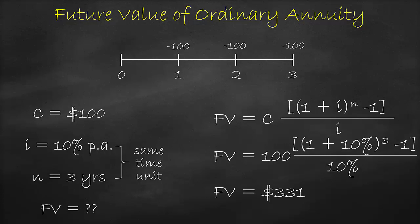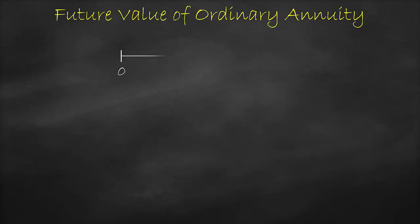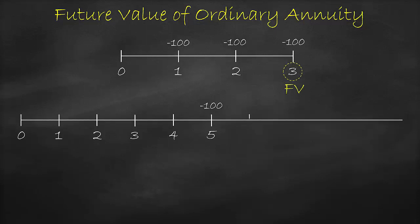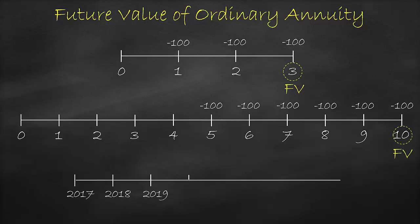Please note that the future value of the ordinary annuity is always at the last cash flow. For example, if my last equivalent cash flow is in three years, the future value will be in year three. Or if my last equivalent cash flow is in year 10, the future value will be in year 10. Or if my last equivalent cash flow is in year 2025, the future value will be at year 2025.